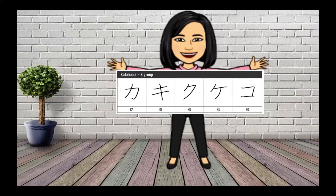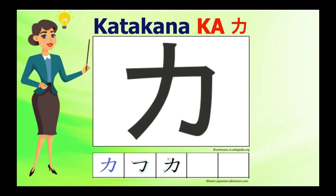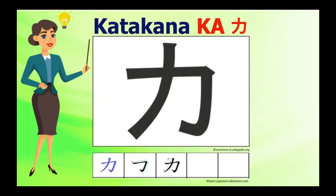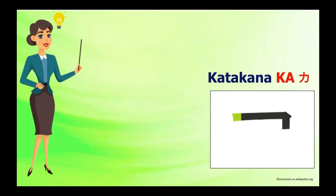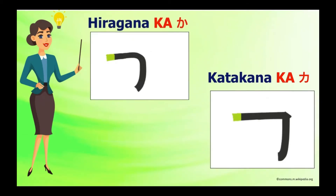Next is the katakana K group: ka-ki-ku-ke-ko. The K group brings us some similarities with hiragana. Katakana Ka is pronounced as 'ka'. It is quite similar to hiragana Ka, losing the last stroke and becoming less roundish. Note that the first stroke in katakana Ka is slightly curved.